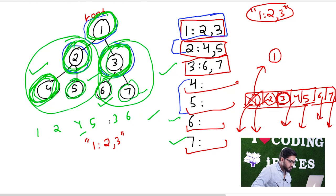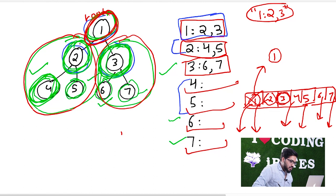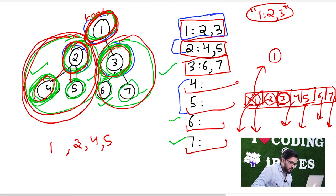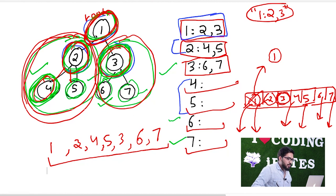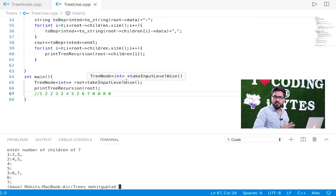Let me explain the order once more. First, one's work is done, then it calls recursion on two and three. Two is processed first — it calls recursion on four and five. Four is done, then five. Once the two-four-five subtree is complete, we proceed to three, then six, then seven. This is the traversal order: one, two, four, five, three, six, seven. So whatever number of children a node has, recursion is called on each of them. I hope both methods — level-wise and recursion — are now clear. Thank you.